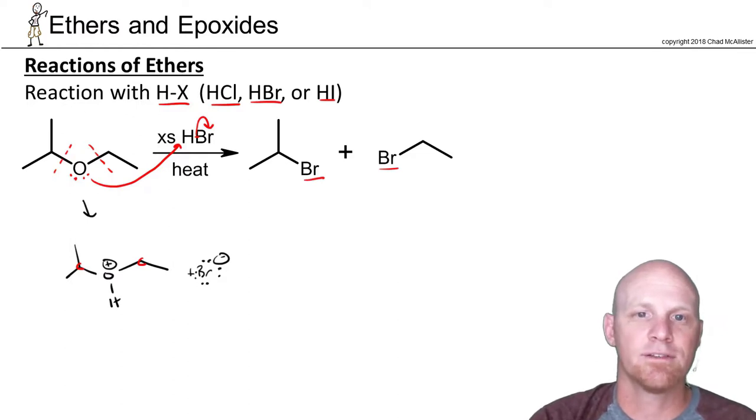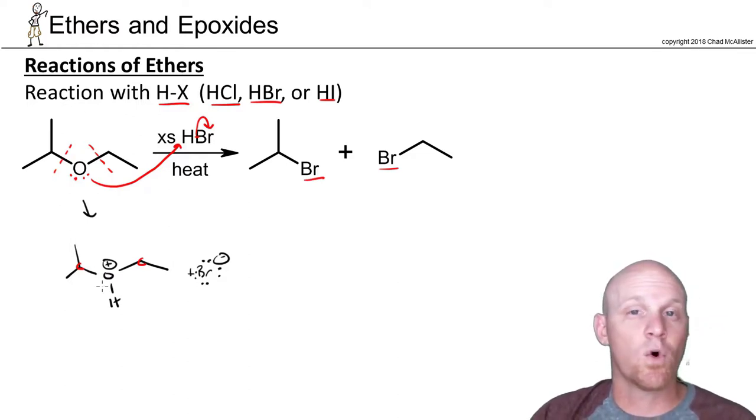An oxygen with three bonds and a plus charge is a good leaving group in the same way that water was a good leaving group whereas an alcohol did not have a good leaving group. Same kind of thing. You protonate an alcohol and the OH becomes water becomes a good leaving group. Same thing here. You protonate an ether and your alkoxy leaving group, which is poor, becomes a good one because it's going to be an alcohol. And in this case it generally is going to leave from the more substituted side first.